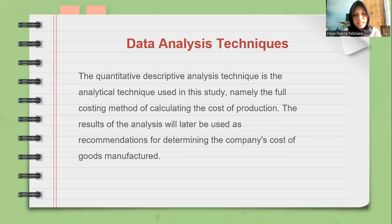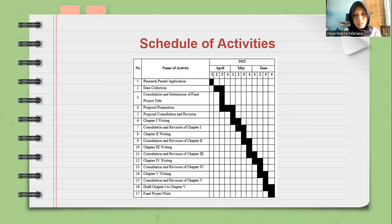The data analysis technique used in this study is quantitative descriptive analysis, specifically the full costing method of calculating the cost of production. The results of the analysis will be used as a recommendation for determining the company's cost of goods manufactured. The last section is the schedule of activities, listing activities to be held from April to June 2022, from the research permit application until the final project print.